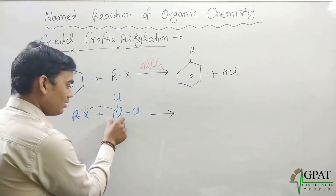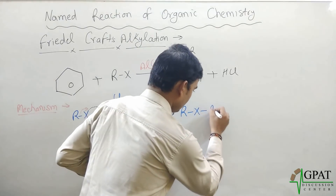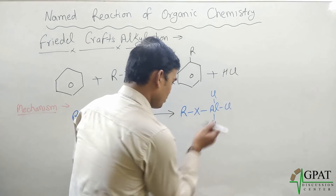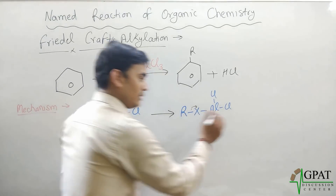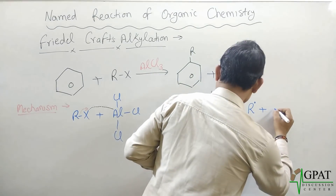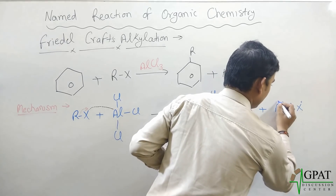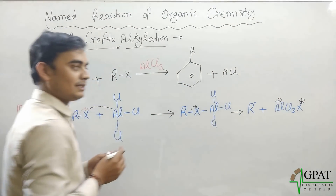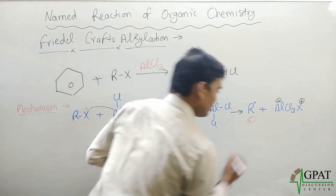After this reaction, the halide gets attached to the aluminium molecule, and the alkyl group (R) forms a carbocation. The halide moves over and an intermediate product is formed. Since the bond shifted toward the halide, this bond is cleaved and the carbon forms a carbocation.